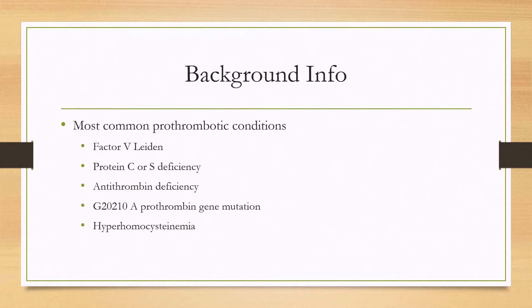Some of the more common prothrombotic conditions that can cause the disease are factor V Leiden, protein C or S deficiency, antithrombin deficiency, the prothrombin gene mutation, and hyperhomocysteinemia.